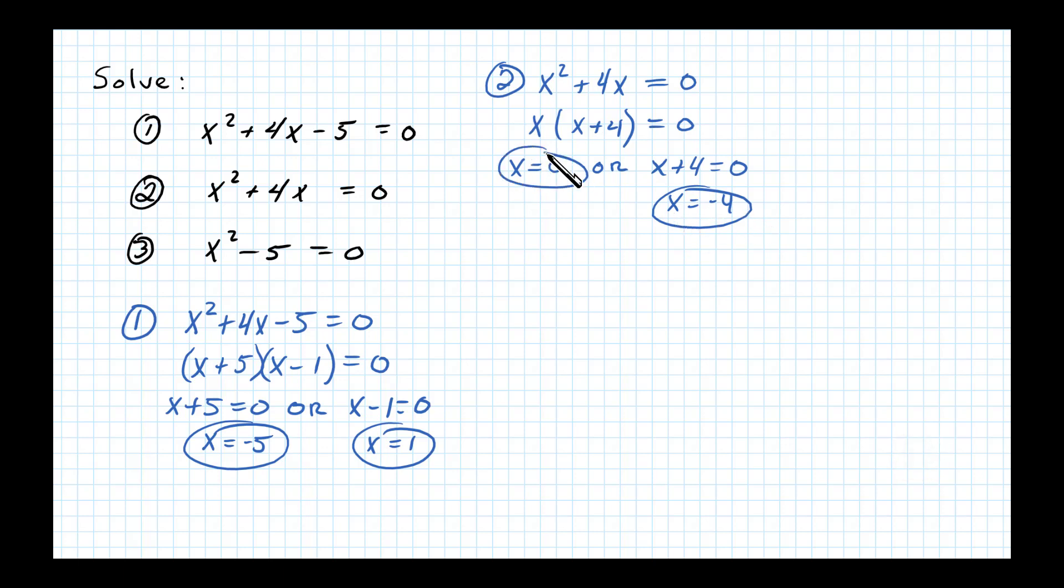For the third equation, notice that it is a binomial but there is no GCF, so I'm going to choose a different method. I'm going to solve this by extracting square roots. The first step is to get the square by itself and then take the square root of both sides. Don't forget to put a plus or minus when you do that so we don't lose the negative solution. The square root of x squared is x, and that equals plus or minus the square root of 5. So there are two solutions: x equals negative square root of 5 or x equals positive square root of 5.